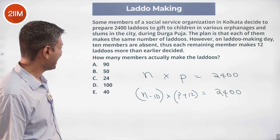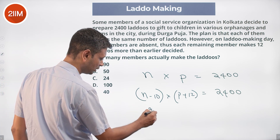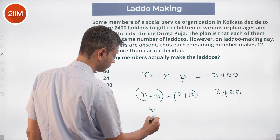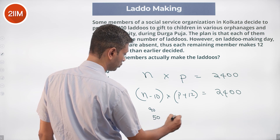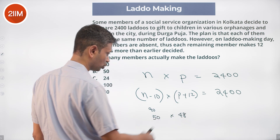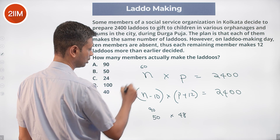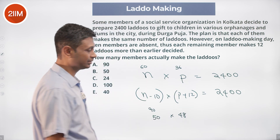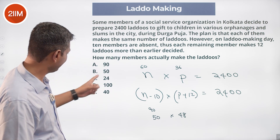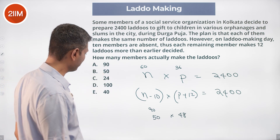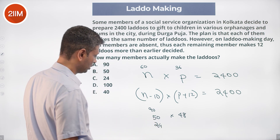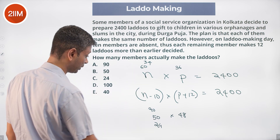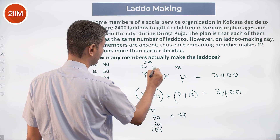Testing factor pairs: if N - 10 were 90, then 90 is not a factor of 2400 in a consistent way — doesn't work. If N - 10 were 50, then N = 60, giving 50×48 = 2400 but 60×36 ≠ 2400 — doesn't work. N - 10 = 24 gives N = 34 — doesn't work. N - 10 = 100 gives N = 110 — doesn't work either.